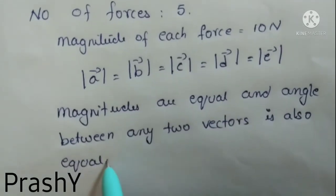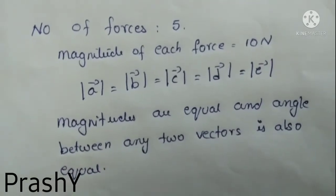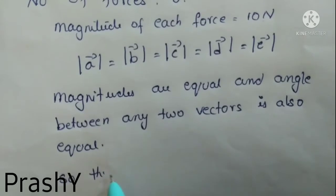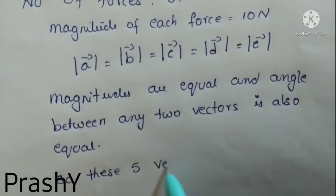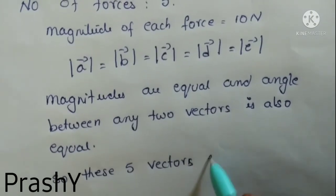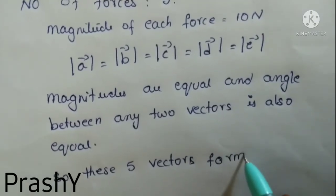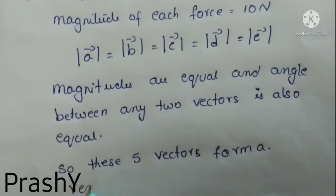So if the magnitudes and angles are equal, these 5 vectors will form a regular pentagon.